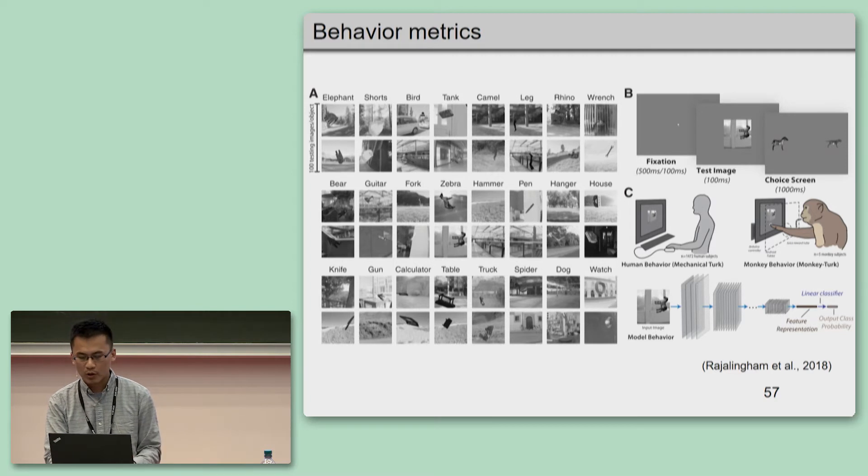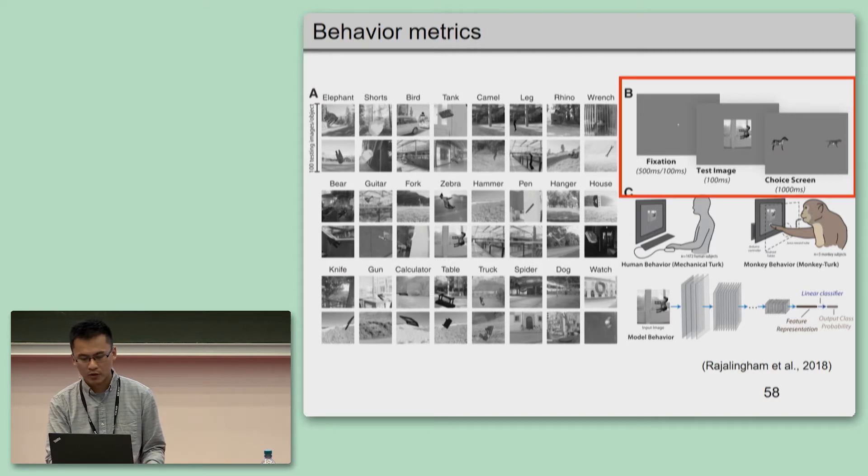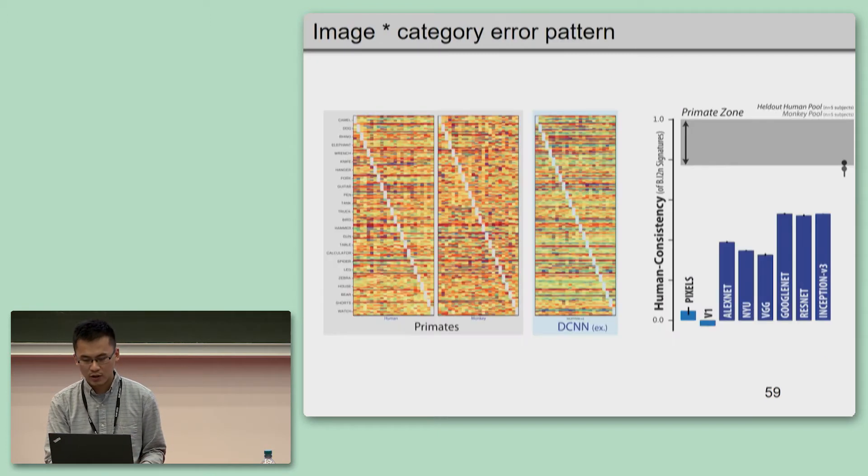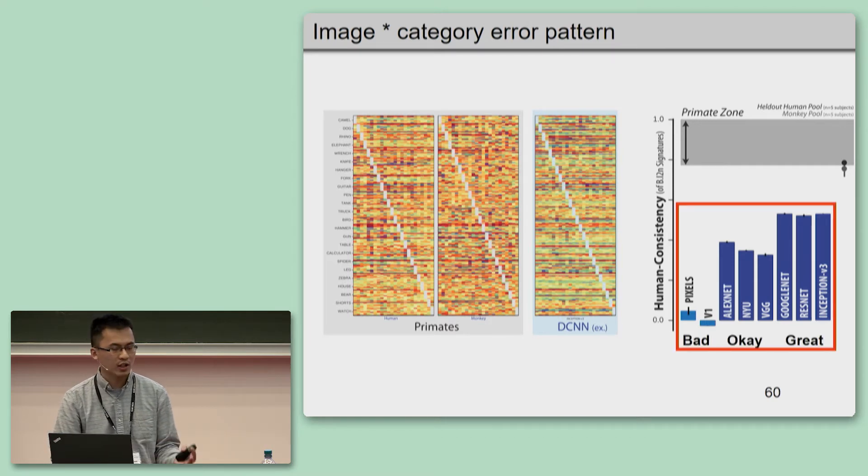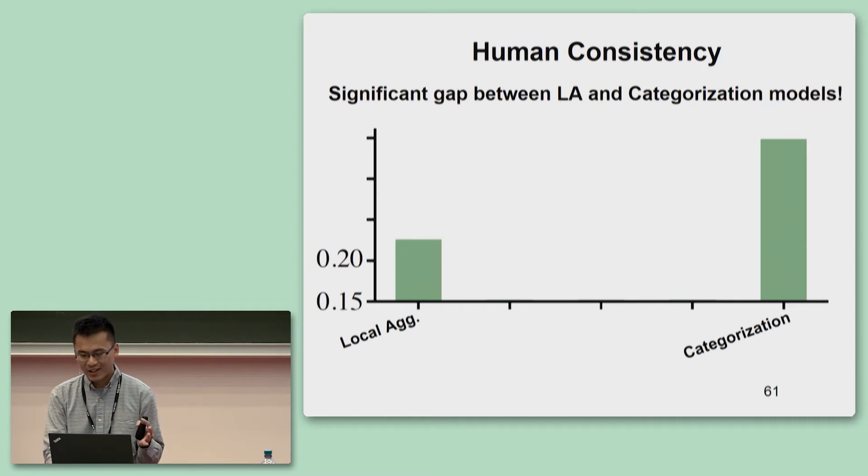But before giving that answer, we first introduce a new metric which is proposed by colleagues in Jim DeCarlo's lab to measure the behavior similarities between models and human or primates. This metric is collected through asking subjects to correctly categorize objects with distractors presented. The same images and distractors are then presented to the artificial neural networks. The researchers collect the image times distractor category error pattern metrics and compute their correlation or consistency to human error patterns. This metric has been found strong enough to separate bad models, okay models, to great models. Using this metric, we can see that LA networks are still significantly different from networks trained with categorization tasks. Here, a higher number means more similar to human or primates.